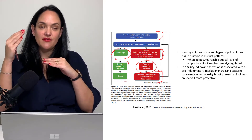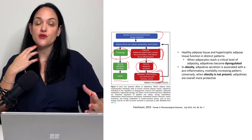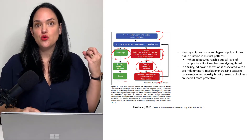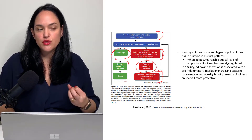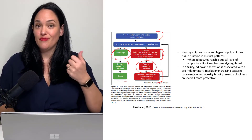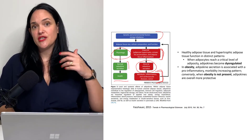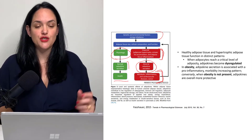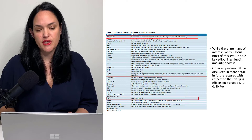Beyond that level of adiposity, adipokine secretion changes to a state that promotes more inflammation and increases risk of all the comorbidities we see with obesity.